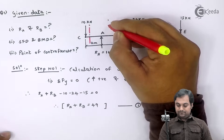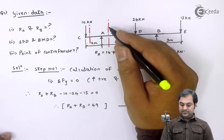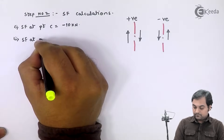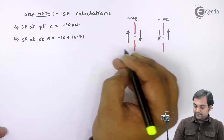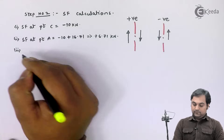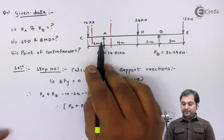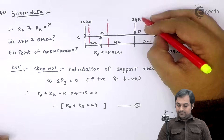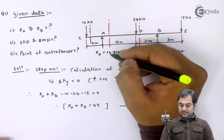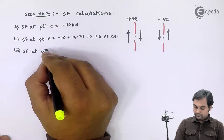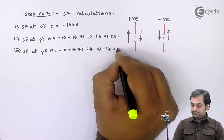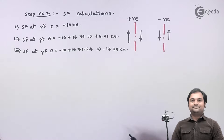Taking the section to the right of A and looking to the left: I have minus 10 and plus 16.71, so SF at point A equals minus 10 plus 16.71, which comes out to be plus 6.71 kilo Newton. This value remains constant from A to D, up to the left of D. Taking the section to the right of D: minus 10 plus 16.71 minus 24, which gives a shear force of minus 17.29 kilo Newton.